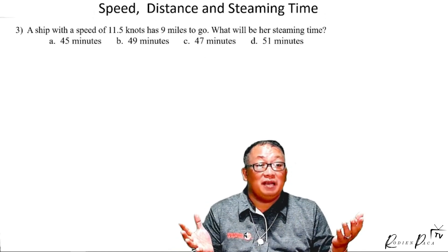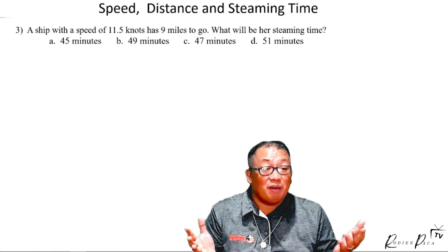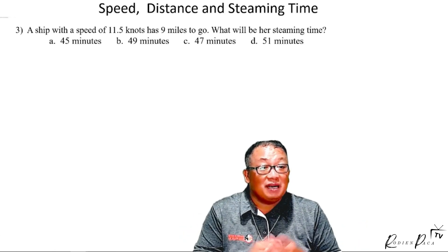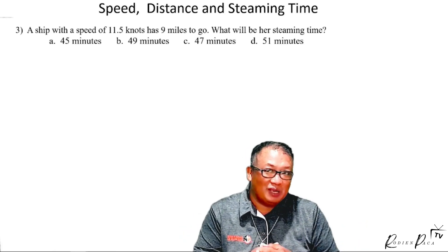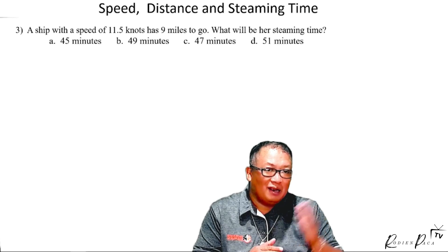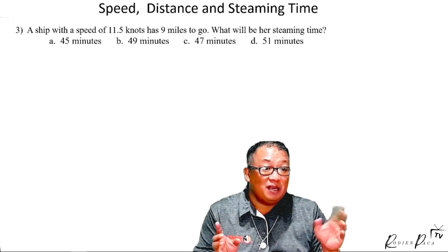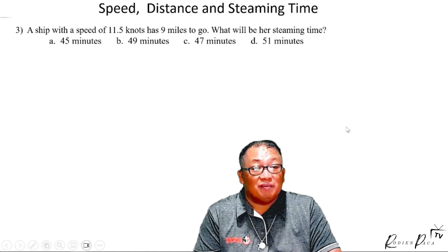A ship with a speed of 11.5 knots has nine miles to go. Nine miles, 11.5 knots speed. We look for time.